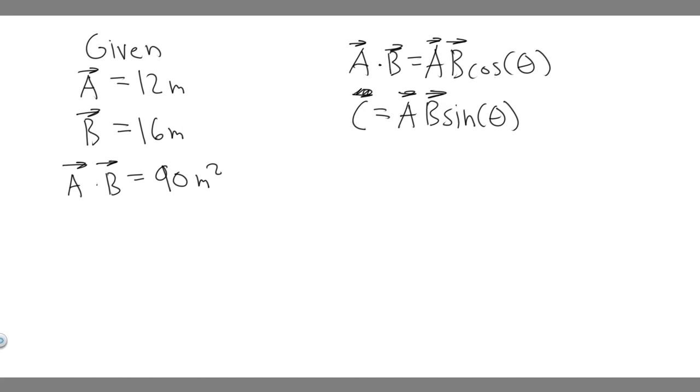So if we want to solve for theta, we just have to solve this. So plugging in our numbers, the dot product between A and B, 90, is equal to A, which is 12, times B, which is 16, times the cosine of theta.